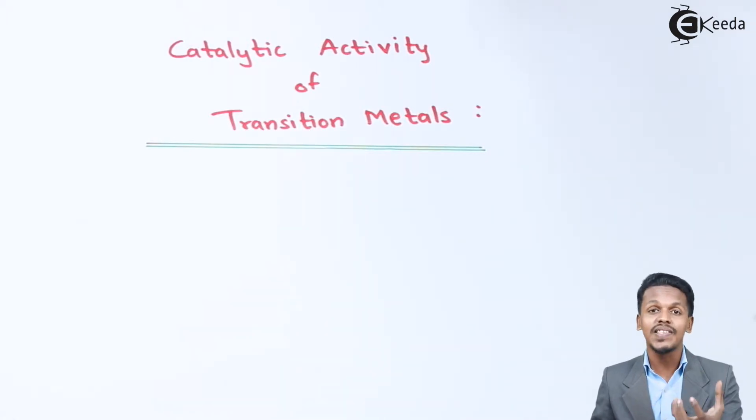Nickel belongs to the 3D transition series and is a very good catalyst in hydrogenation of various reactions like hydrogenation of alkenes. So why do 3D transition series elements behave like good catalysts?